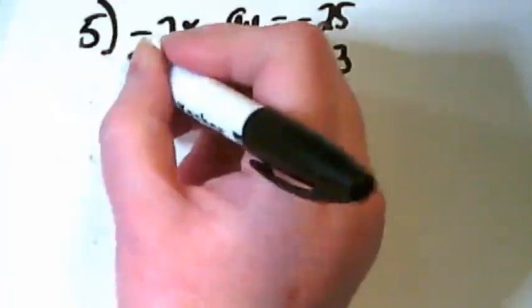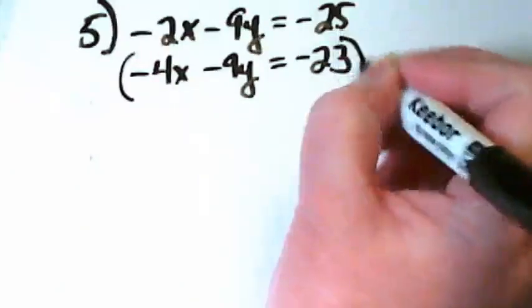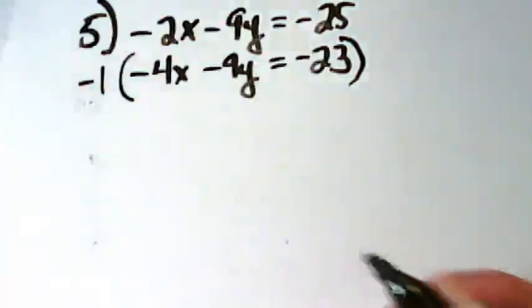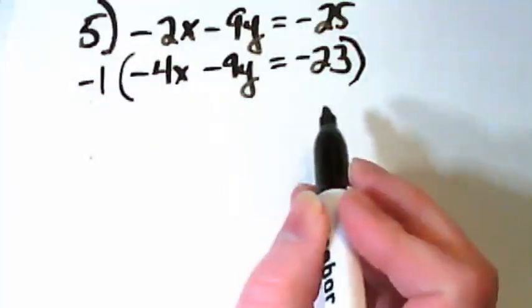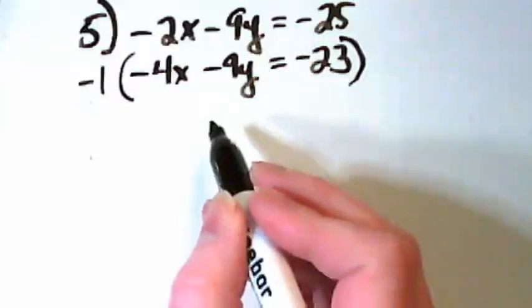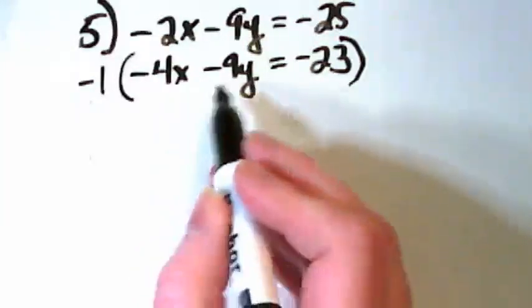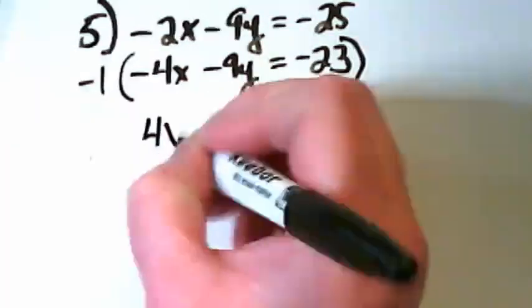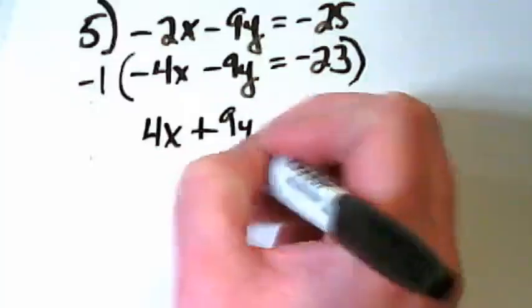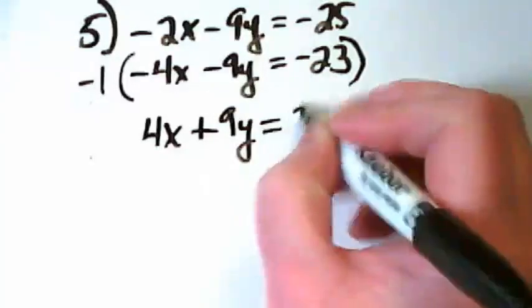I'm going to multiply this one by negative 1. And then the entire thing, every single term gets multiplied by negative 1. That means every sign is going to change. So this is going to become 4x plus 9y equals 23.